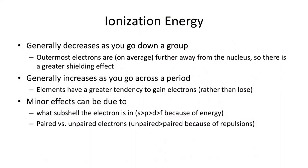Whereas if you go left to right across the periodic table, the ionization energy tends to increase. It becomes harder to lose electrons because atoms would rather gain electrons to have a stable outer shell in terms of their electron configurations. There are some minor effects, like which subshell they're in or whether you have paired or unpaired electrons, but generally speaking the trends still hold.